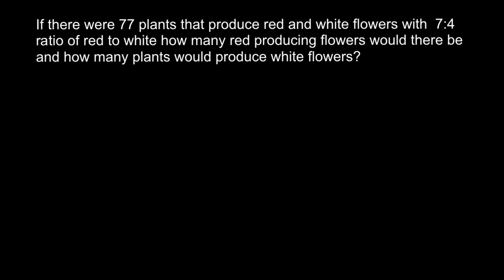If there were 77 plants that produce red and white flowers with a 7 to 4 ratio of red to white, how many red producing flowers would there be and how many plants would produce white flowers?